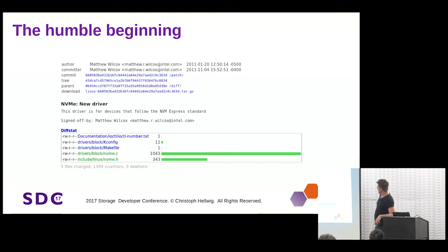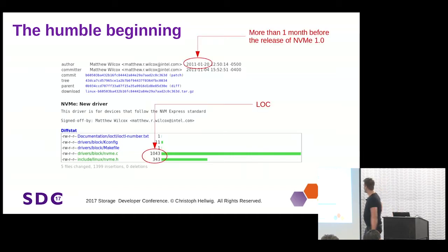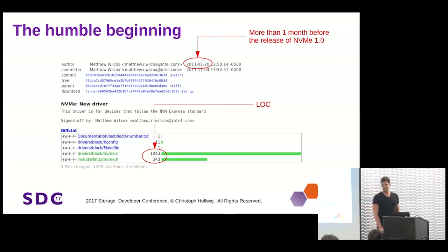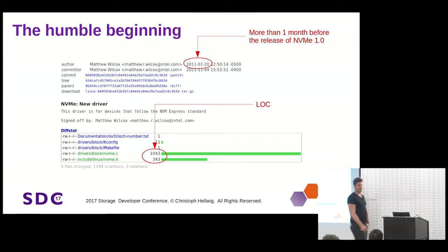The humble beginning of our NVMe driver was our friend and colleague Matthew Wilcox, back in early 2011. If you look at the lines of code in those two files, it's actually pretty much exactly the size of our virtio SCSI example for a trivial little driver. Interestingly, looking at that commit in GitWeb, the date was actually a month before the NVMe 1.0 spec got released — so someone had a head start.